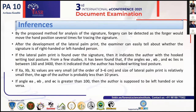The inferences of the study are: by the proposed methods for analysis of the signature, forgery can be detected, as the forger would move the hand position several times when tracing the signature. After the development of the lateral palm print, the examiner can easily tell whether the signature was done by a right-handed or left-handed person. If the lateral palm print is found over the signature, it indicates the author used a hooked writing tool position. From studies, if the angles theta A, theta B, and theta C lie between 160 and 340 degrees, it indicates a hooked writing position.